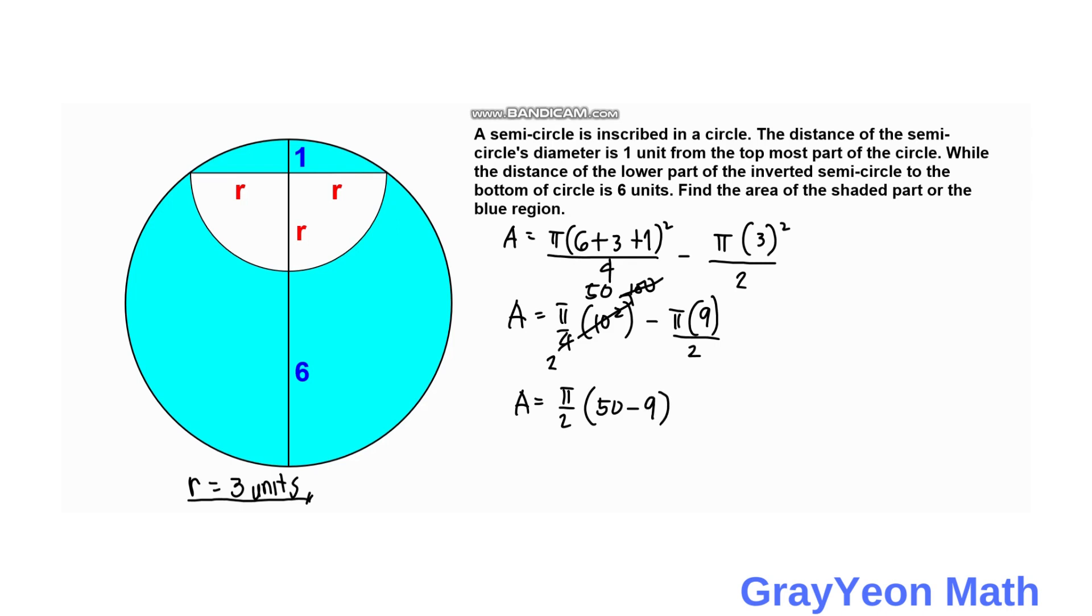So we have area is equal to 41 pi over 2 square units. And that is our answer.